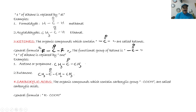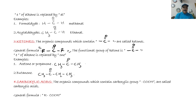Another ketone example: CH3-C(=O)-CH2CH3. Here we have four carbon atoms, so the alkane is butane. The functional group is the carbonyl C=O, so its name is butanone.